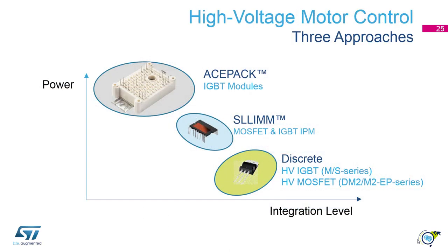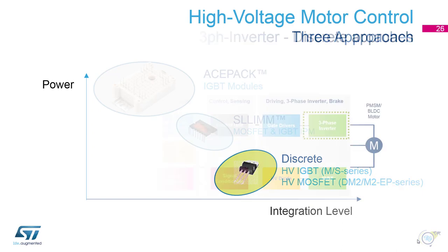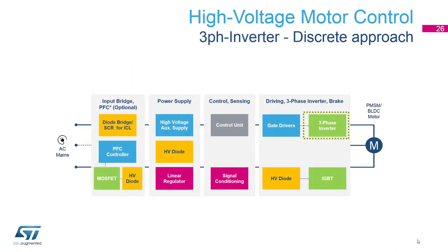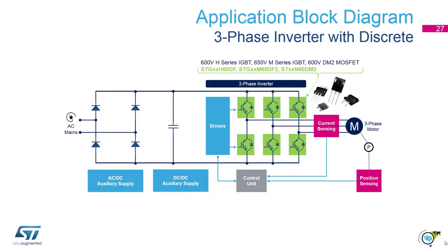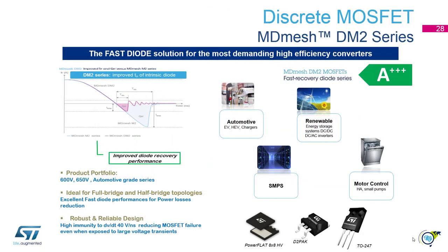Let's move to the third approach for the power stage using discrete power switches. This discrete approach covers only the three phases, and we have to install six individual switches on our board, reaching the lowest level of integration. The discrete MDMesh DM2 MOSFETs are ST's latest fast recovery diode series, best for motor control applications. These 600 and 650 V MOSFETs feature very low recovery charge and time, and show up to 40% lower RDS-ON compared to the previous generation.